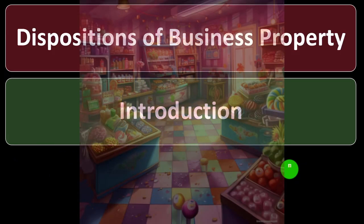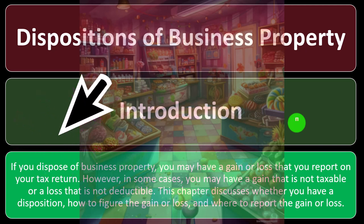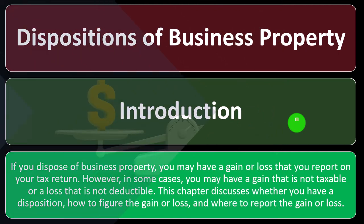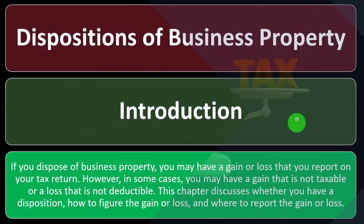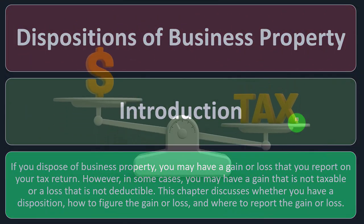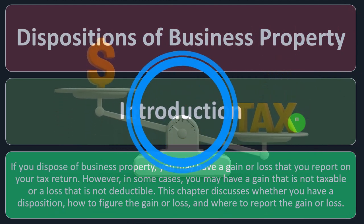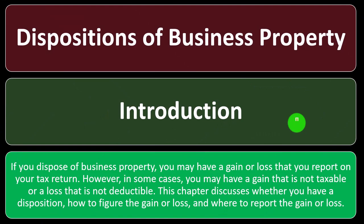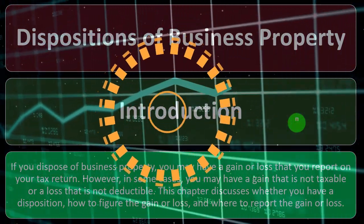Now let's talk about the Disposition of Business Property introduction. If you dispose of business property, you may have a gain or loss that you report on your tax return. However, in some cases you may have a gain that is not taxable or a loss that is not deductible. This chapter discusses whether you have a disposition, how to figure the gain or loss, and where to report the gain or loss.